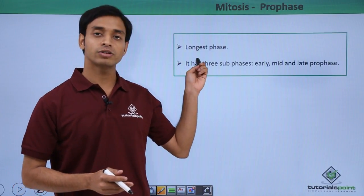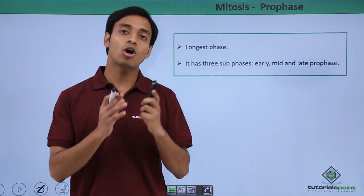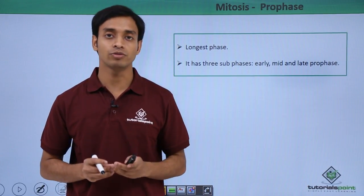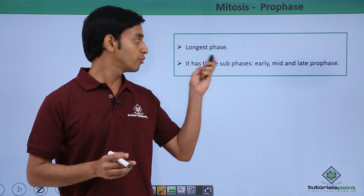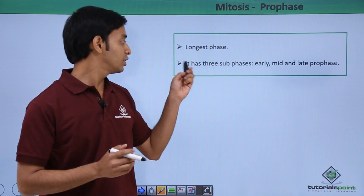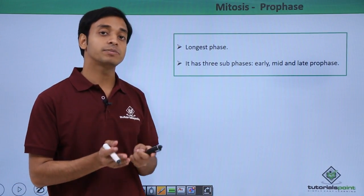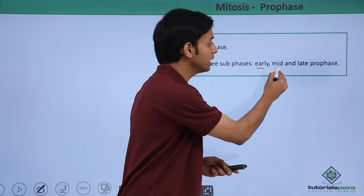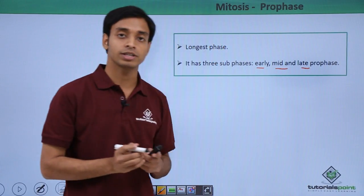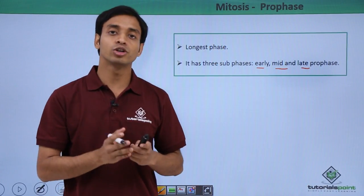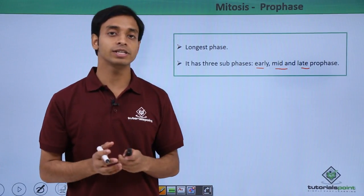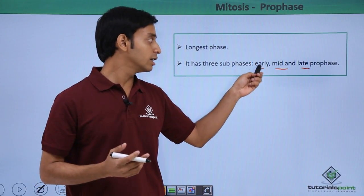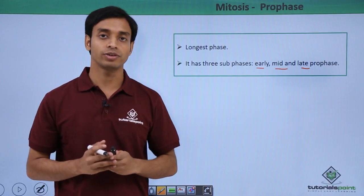Prophase is the longest phase among all the other phases, namely prophase, metaphase, anaphase, and telophase. Prophase has been again divided into three sub-phases, that is early, mid, and late prophase. Now we are going to look into what are the different activities that are happening in these early, mid, and late prophase.